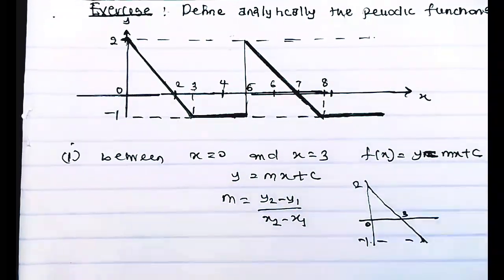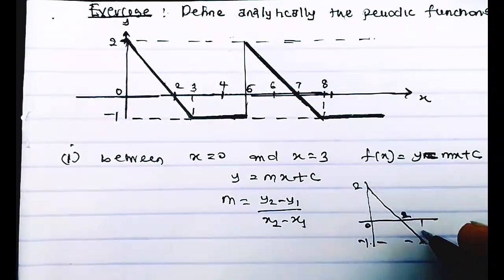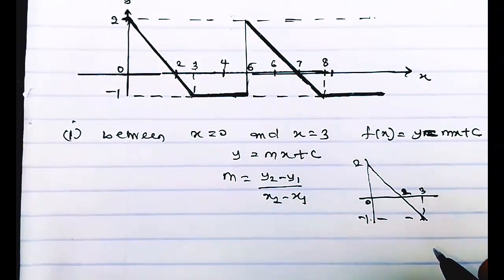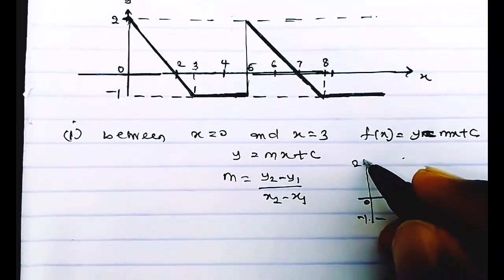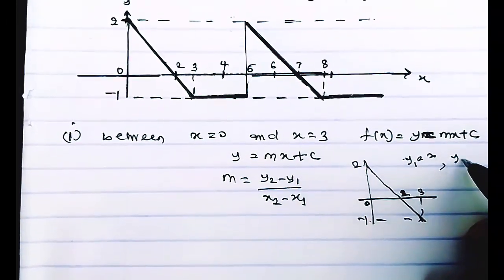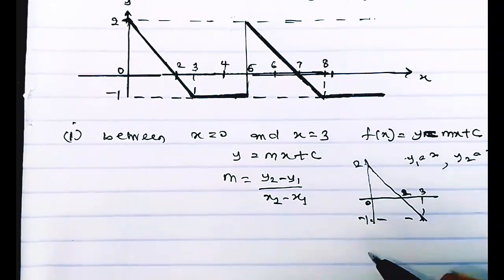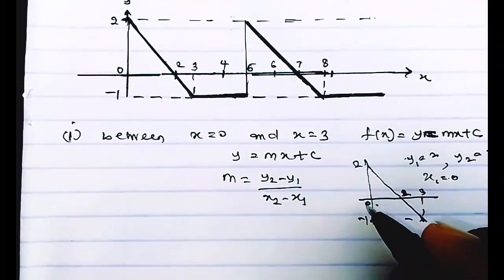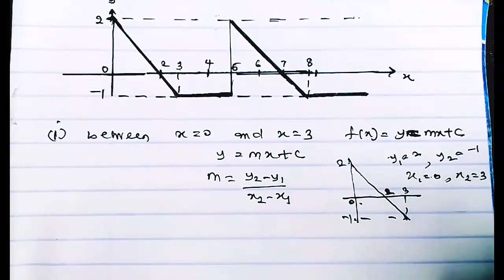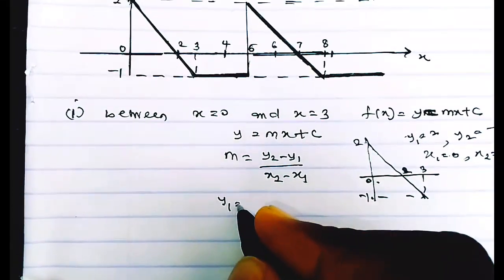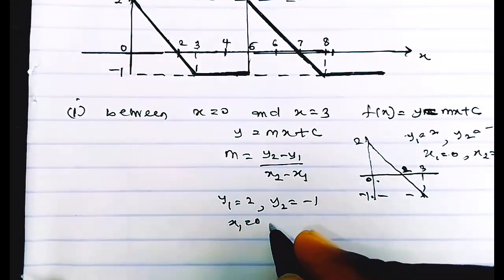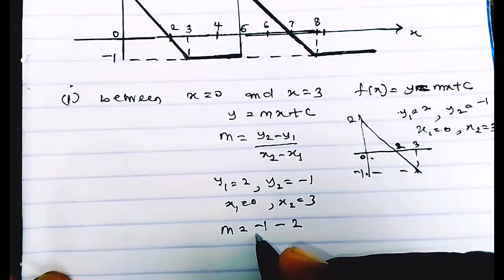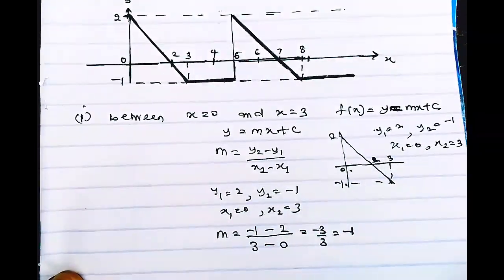On the graph, this is 0 and this is 2, and this is 3. Now let's calculate the slope. Since this is a downward slope, my first value y₁ is 2 and my final value y₂ is −1. My first x-value x₁ is 0 and my final x-value x₂ is 3. So y₁ = 2, y₂ = −1, x₁ = 0, x₂ = 3.